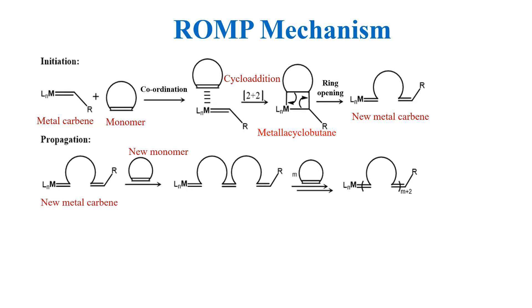In the propagation step, the new carbene reacts with another molecule of cycloalkene. Repetition of these steps leads to the formation of an unsaturated open chain polymer product.